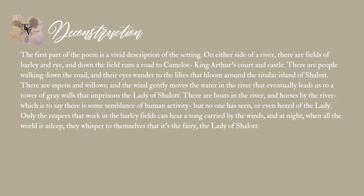The first part of the poem is a vivid description of the setting. On either side of a river there are fields of barley and rye, and down the field runs a road to Camelot, King Arthur's court and castle. There are people walking down the road, their eyes wandering to the lilies that bloom around the island of Shalott, and there are aspens and willows as the wind gently moves the water in the river, eventually leading us to a tower of grave walls that imprison the Lady of Shalott. There are boats and horses by the river — some semblance of human activity — but no one has seen or even heard of the Lady.